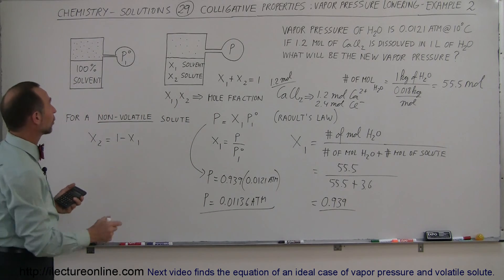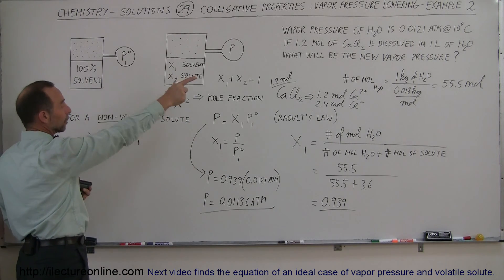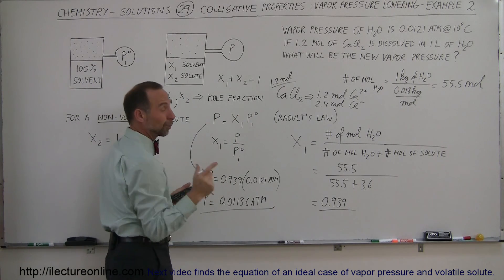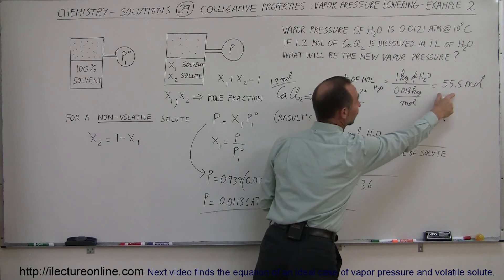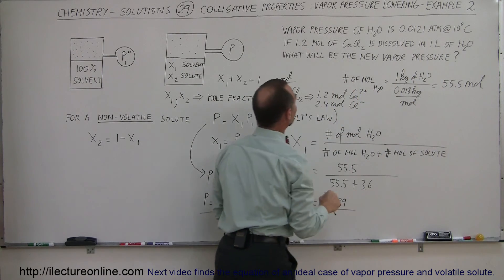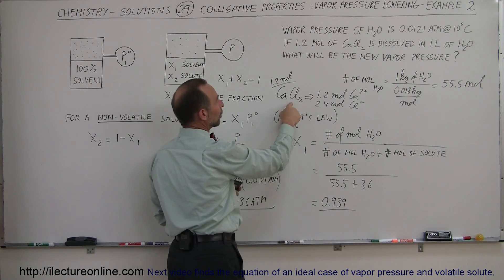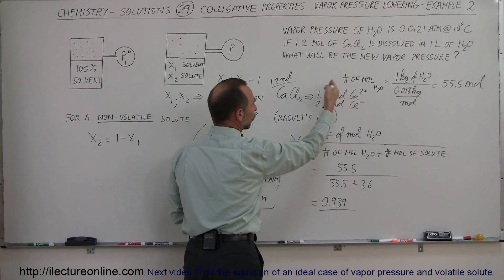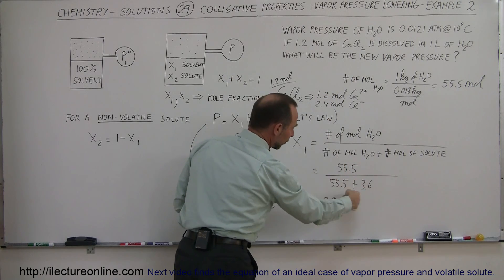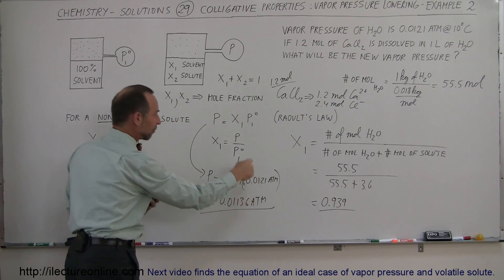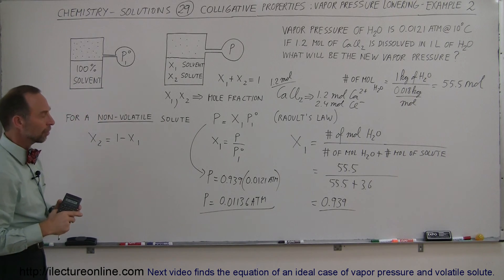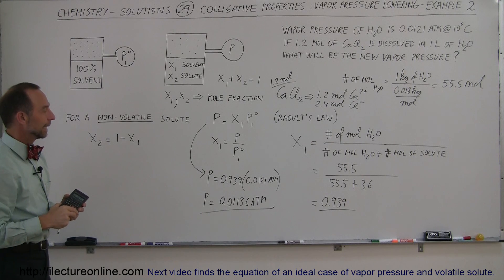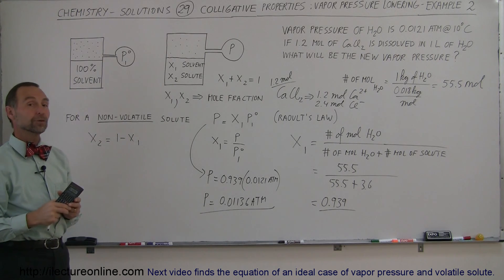So it's just a straight ratio. All we do is take the original pressure of the solvent at 10 degrees centigrade and multiply it times the mole fraction of the solvent in the new solution — realizing there are 55.5 moles of water in one liter of water. We dissolve calcium chloride: 1.2 moles of calcium ion plus 2.4 moles of chloride ion gives a total of 3.6 moles. That gives us the new ratio, and multiplying by the original pressure gives the vapor pressure of the solution when we add calcium chloride to water.